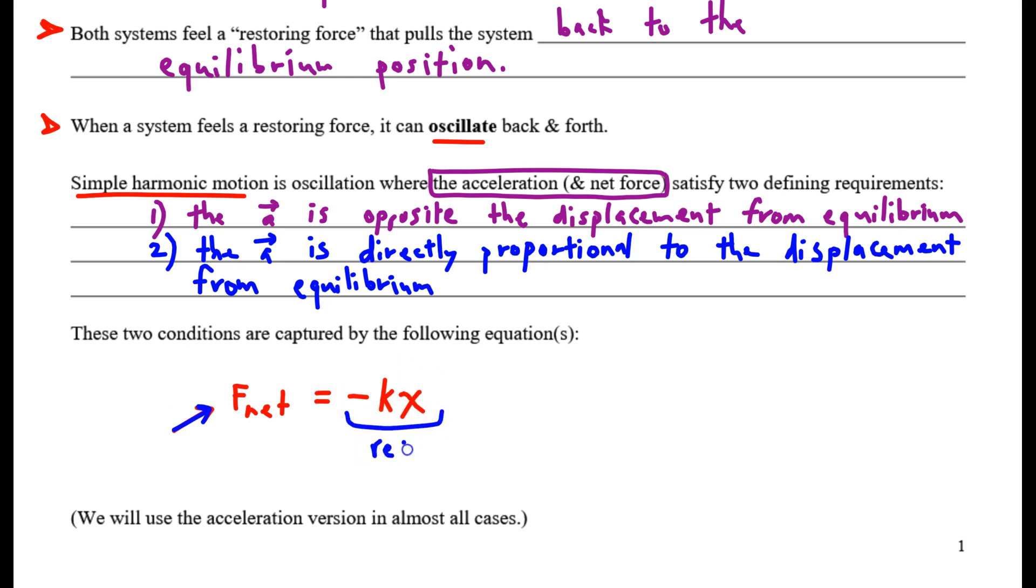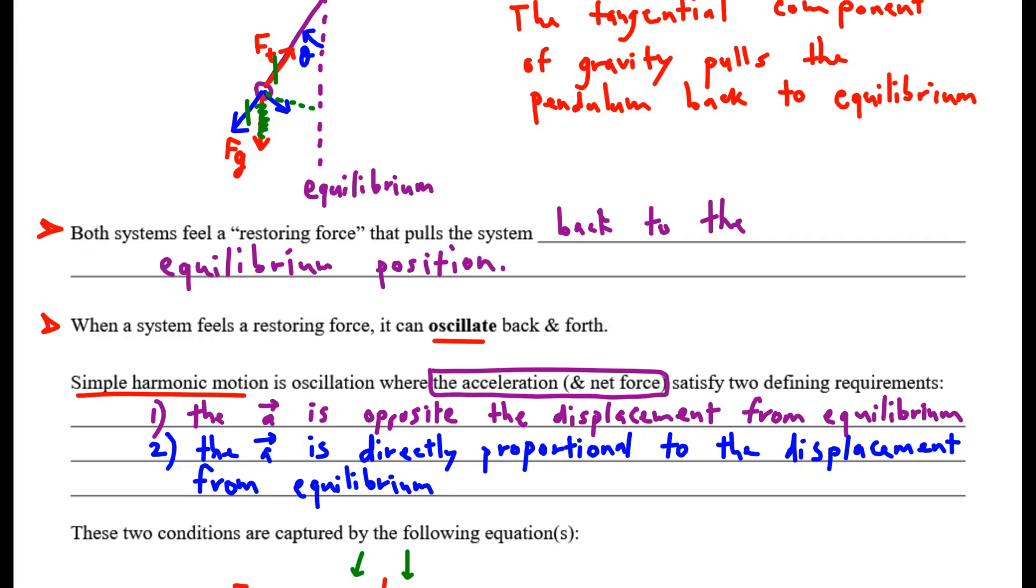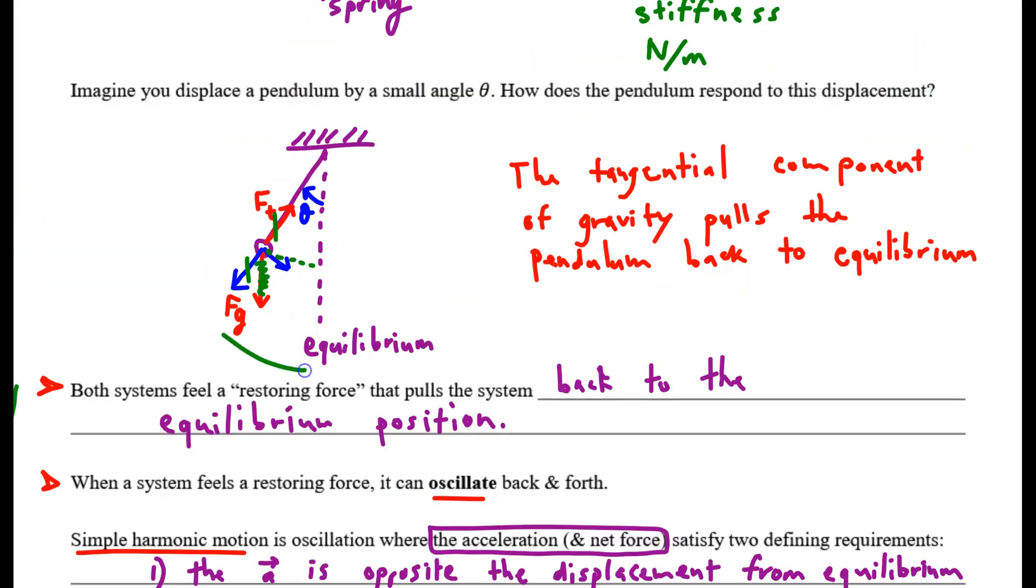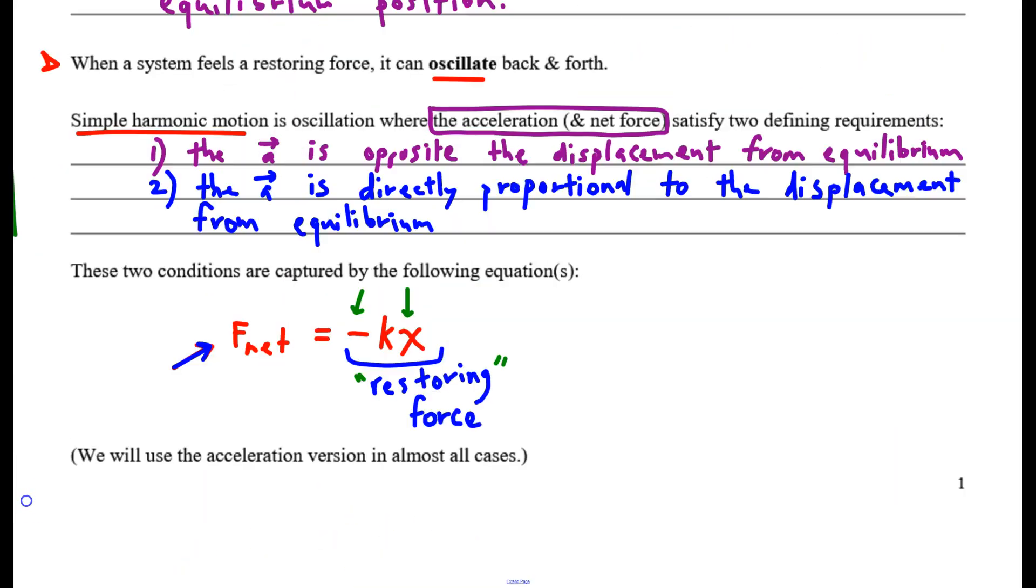This on the right side is the restoring force. What makes negative kx restoring? Well, the force negative kx is opposite the displacement. So if you move your pendulum to the left, the negative kx force pulls back toward equilibrium in the opposite direction. It restores the system back to where it started. That's what makes negative kx a restoring force.